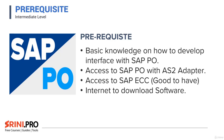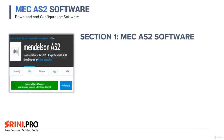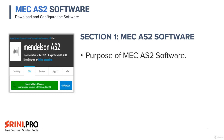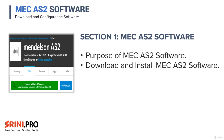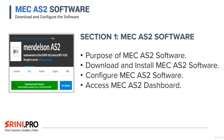Let's look at the sections in this course. In section one, we will look at the Mac AS2 software — Mac being the Mendelssohn AS2 software — which is used to send and receive messages over AS2. In the first lecture, we'll see the purpose of the Mac AS2 software and where and how you will use it in your interface development. Then I'll show you how to download, install, and configure the Mac AS2 software on your local machine, and how to access the Mac AS2 dashboard.